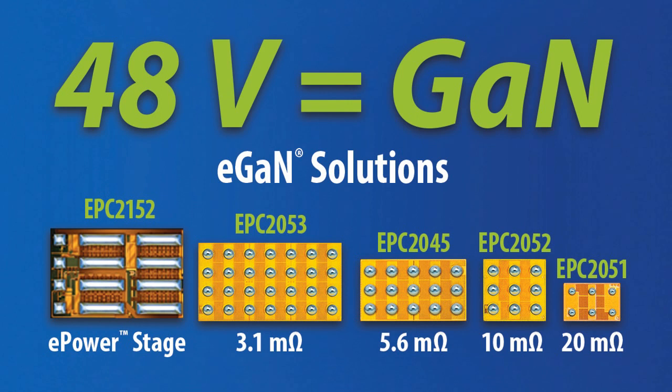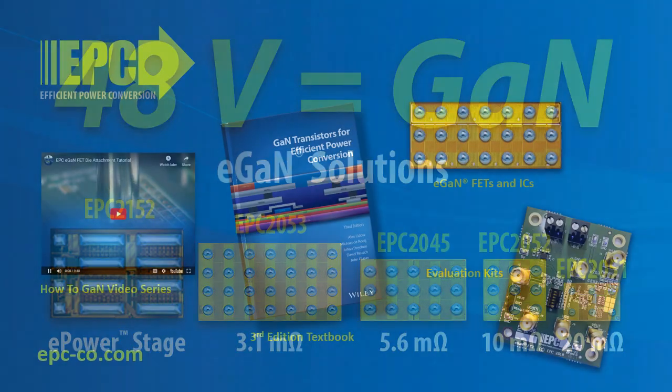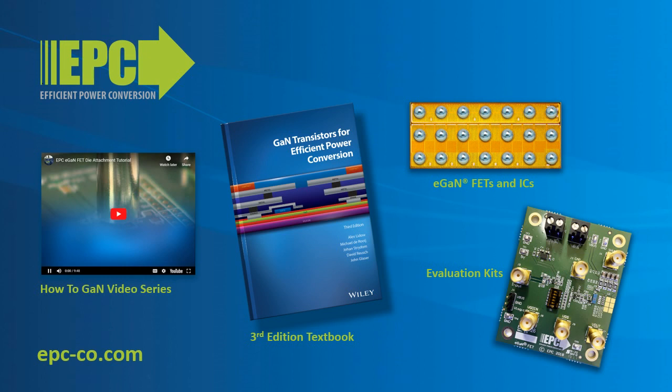EPC offers a full family of 100-volt eGaN FETs for 48-volt conversion with ultra small size and RDS(on) ranging from 20 milliohms down to 3 milliohms. EPC also offers an integrated power stage including drivers, level shifters, bootstrap, and half-bridge FETs. This device simplifies design and reduces size. In all topologies with 48-volt input, the highest efficiency comes with using eGaN devices. For more information on eGaN FETs and ICs for high-density computing, visit epc-co.com.